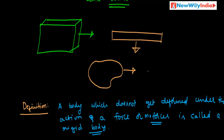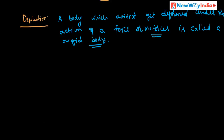Now let us describe some important points related to rigid body. The first one is point of action of force. Consider a rigid body — this is the rigid body and O is the centroid. Here we apply some force at a point A on the rigid body. This point A is called the point of action of force. The point on a rigid body where a force acts is called the point of action of force.